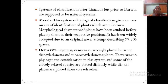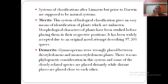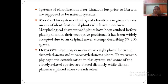The demerit of the natural system is that gymnosperms are wrongly placed between dicots and monocots. The broader classification of Bentham and Hooker is: dicotyledons, gymnosperms, and monocotyledons — three divisions. Gymnosperms placed in between dicots and monocots is not satisfactory. Another demerit is that closely related species are sometimes placed distantly, and distantly related species are placed together.